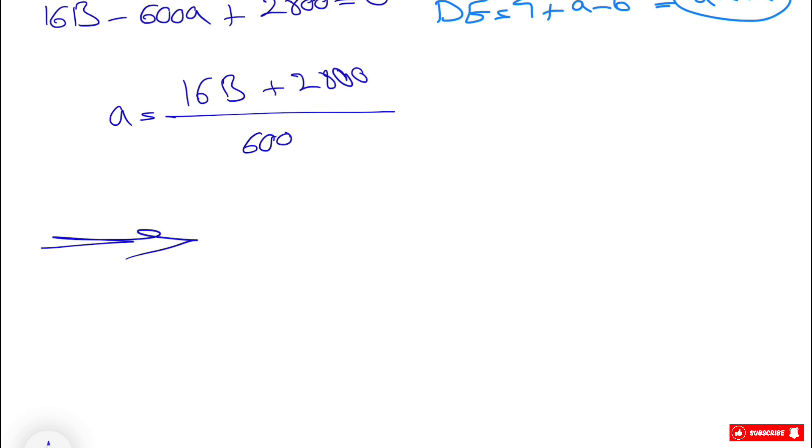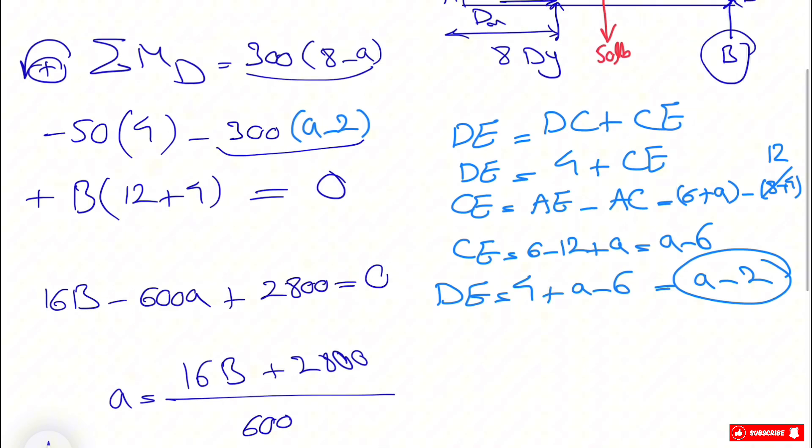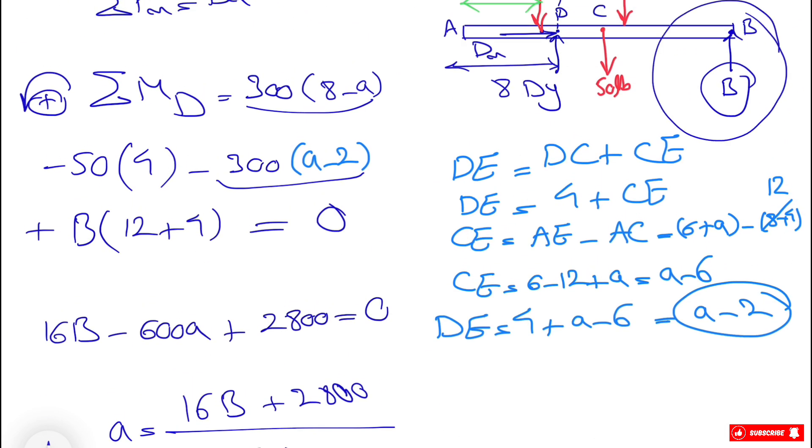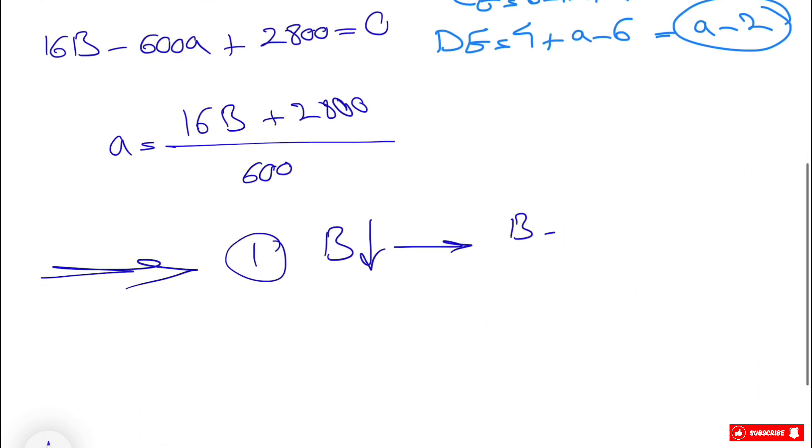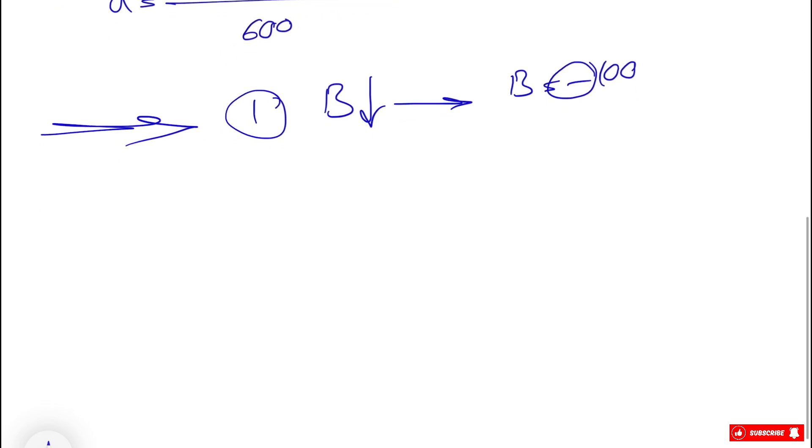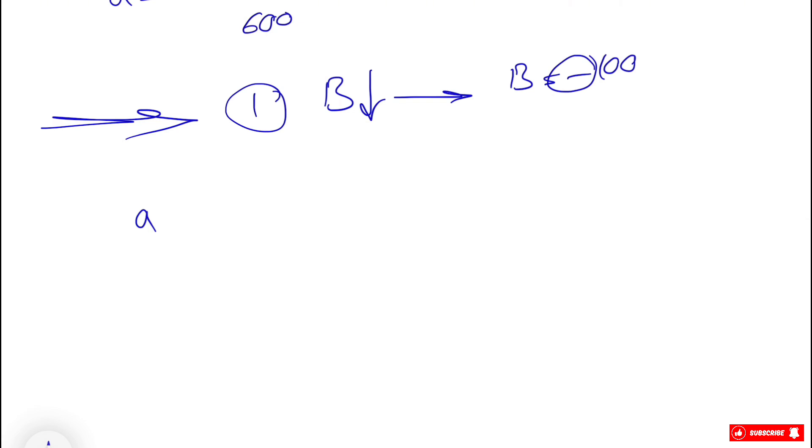So we have two conditions for B. The first condition is when B is downward. When B is downward, it will be in the opposite direction that we found here because we assume that B is upward. So the first condition, where we have downward 100 pounds, our B will be minus 100. That negative sign counts for the downward direction which we need to consider. So if that's the case, our a will be 16 times minus 100 plus 2800 divided by 600. This would give us two inches.